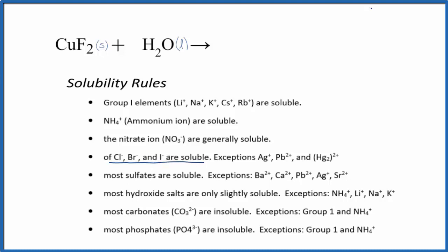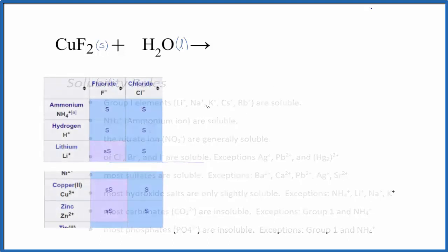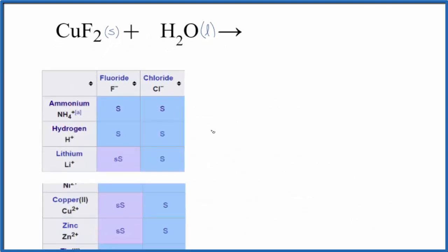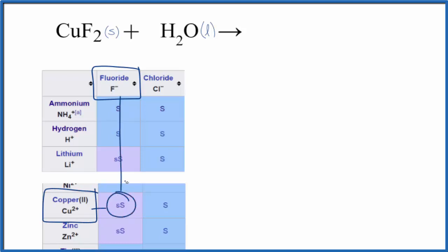So let's look at a solubility chart to see what's going on. Here's a small portion of a larger solubility chart. We have fluoride right here — that F minus — and here's our copper, the Cu2 plus. We go over and down, and we see SS, which stands for slightly soluble. So most of this, when we put it in water, will remain a solid. It won't dissolve, but some of it will dissolve a little bit.